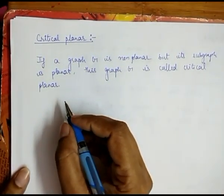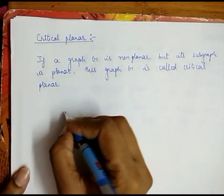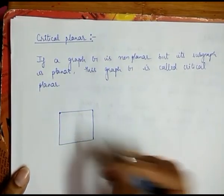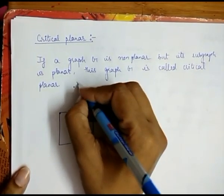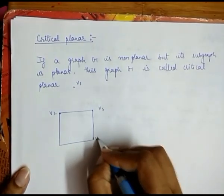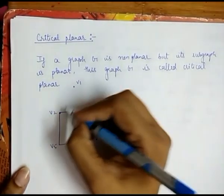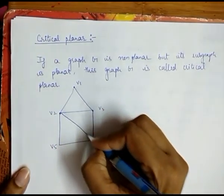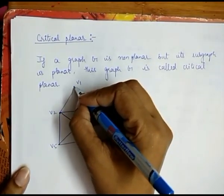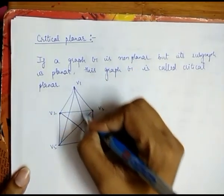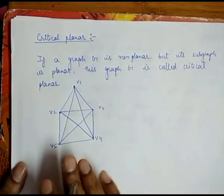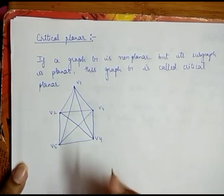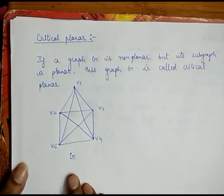Suppose we start by taking a non-planar graph, meaning there exist some crossover points. We take vertices v1, v2, v3, v4, v5 and join them with edges. So this is a non-planar graph, and this is our graph G.